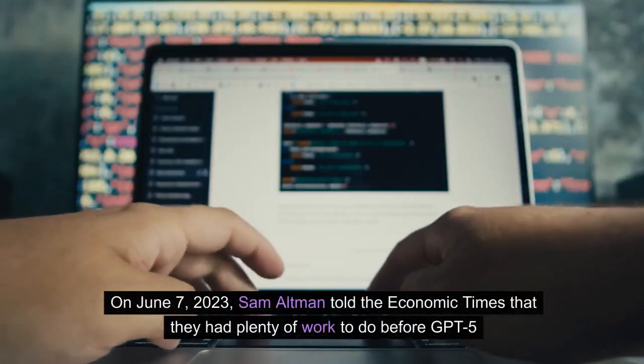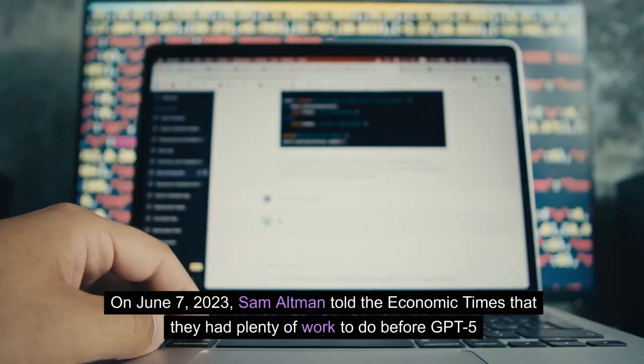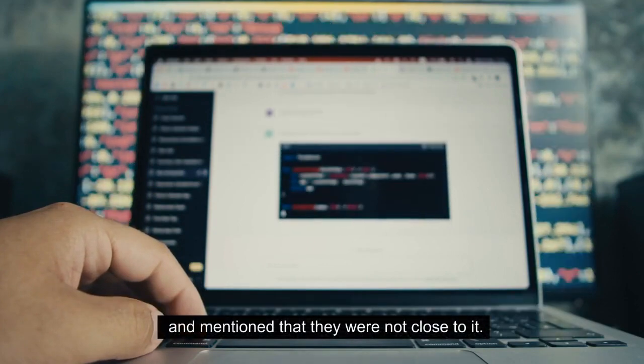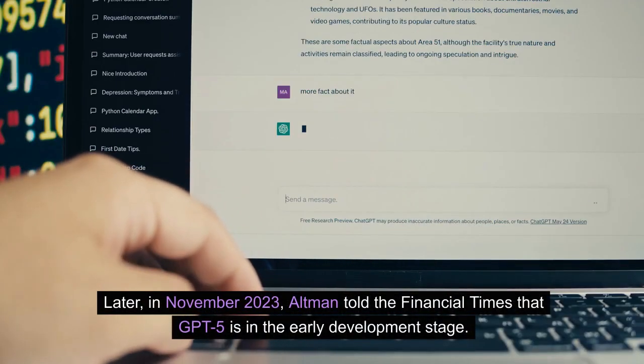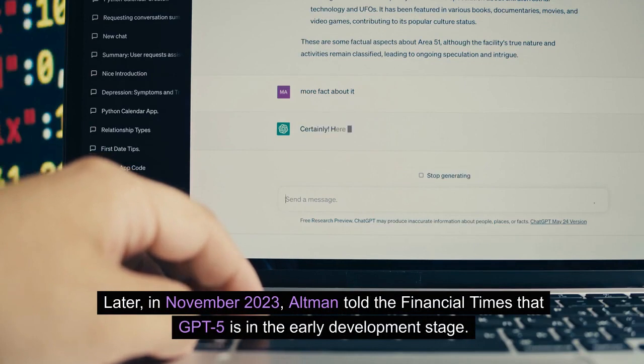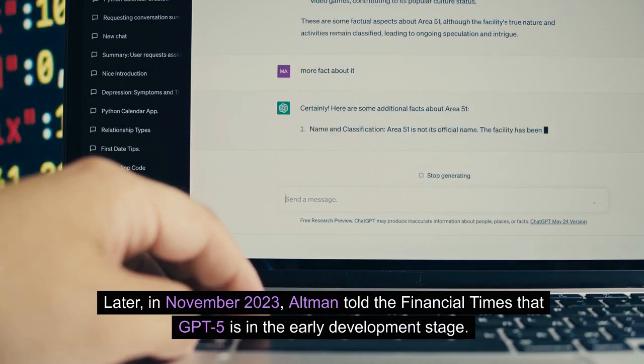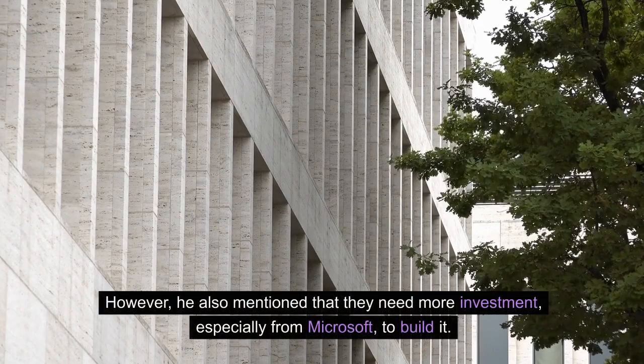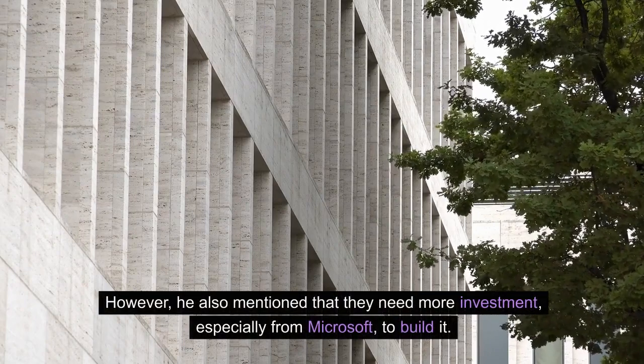On June 7, 2023, Sam Altman told the Economic Times that they had plenty of work to do before GPT-5 and mentioned that they were not close to it. Later, in November 2023, Altman told the Financial Times that GPT-5 is in the early development stage. However, he also mentioned that they need more investment, especially from Microsoft, to build it.